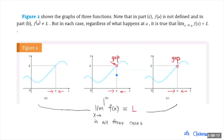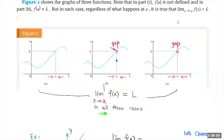For the last case as well, when x approaches a from the left side along the curve, f of x is approaching L, and on the right side the function value is also approaching L. So in all three cases, the limit as x approaches a is equal to L. All three of them have the limit of f of x as x approaches a equal to L.